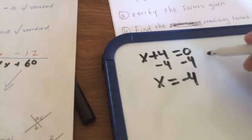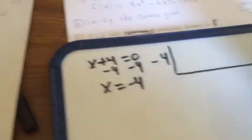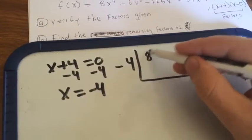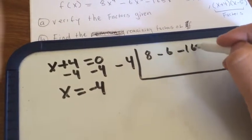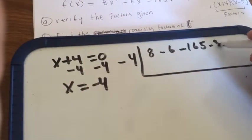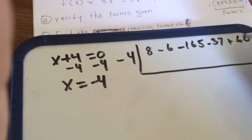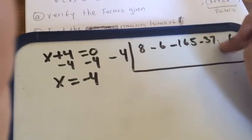We're going to divide that whole thing by negative 4. We have an 8, a negative 6, negative 165, negative 37, and a positive 60.